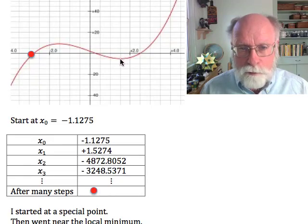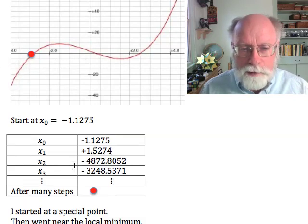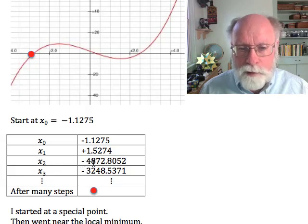And now when you go to the function and follow the tangent line, it goes almost parallel to the x-axis and the next point x sub 2 is minus 4,872.